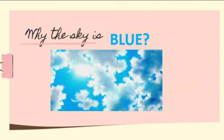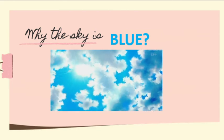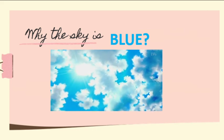Why is the sky blue? Gases and particles in Earth's atmosphere scatter sunlight in all directions. Blue light is scattered more than other colors because it travels as shorter, smaller waves. This is why we see a blue sky most of the time.